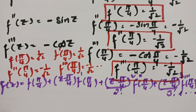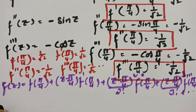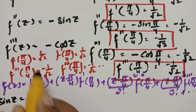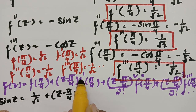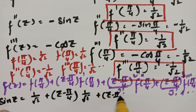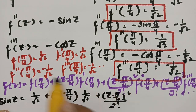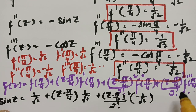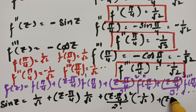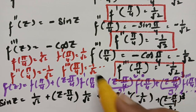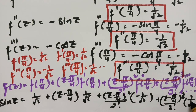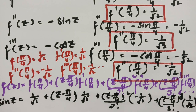Substituting the values, sin(z) = 1/√2 + (z − π/4) · (1/√2) + (z − π/4)²/2! · (−1/√2) + (z − π/4)³/3! · (−1/√2) + and so on. This is the Taylor series expansion of sin(z) about z = π/4.